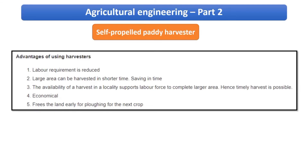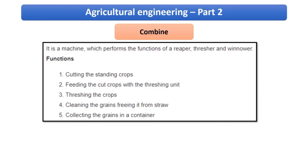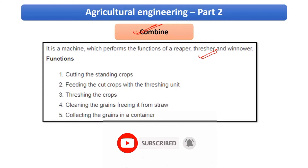The advantage of the self-propelled paddy harvester is that it uses its own engine, so labor requirement is reduced, larger areas can be harvested in shorter time, and it is economical. The combine harvester performs the functions of a reaper, thresher, and winnower together — reaping is cutting the crop, while threshing and winnowing involve separating the edible part from its cover. All three operations are performed by a single machine.